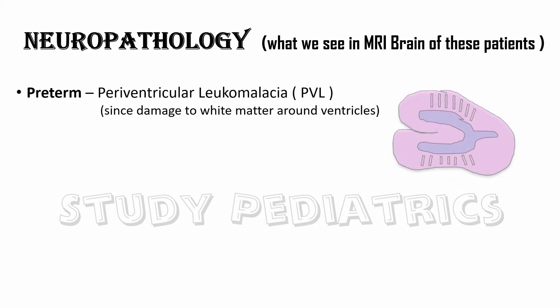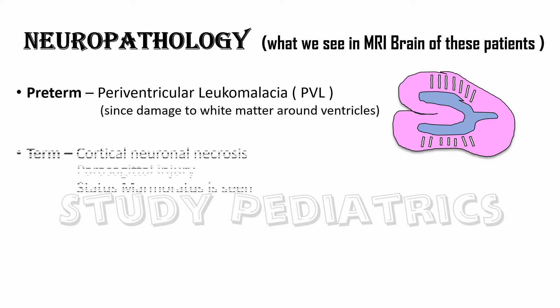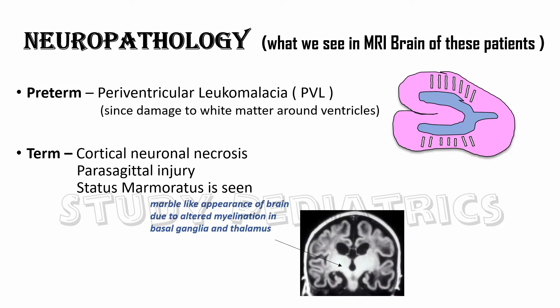In preterm patients, their brain MRI scan shows periventricular leukomalacia, or PVL in short. It occurs due to damage to the white matter around the ventricles. Term patients show cortical neuronal necrosis and parasagittal injury, which is seen as status marmoratus, or marble brain disease.